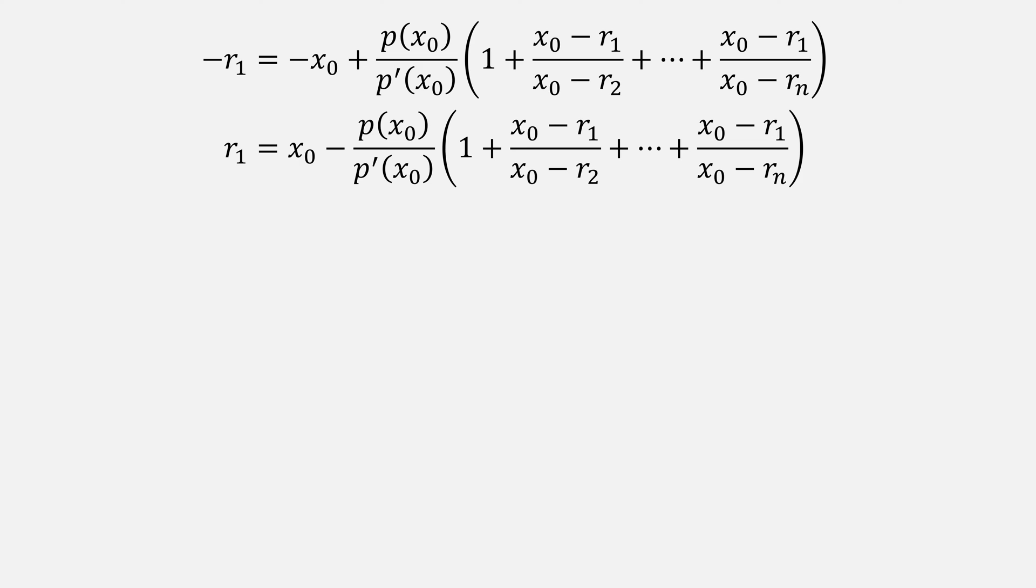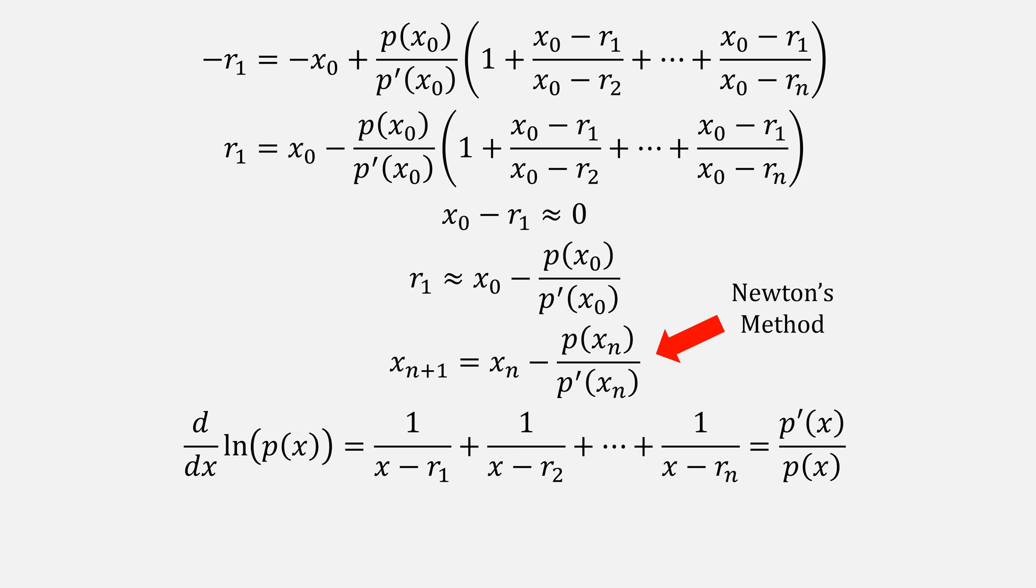Notice that we said x0 was close to r1, so that subtraction is about 0 for all the numerators in that summation. Therefore, r1 is approximately x0 minus p at x0 divided by p prime at x0. If we let that value be x sub n plus 1, this is Newton's method. We came up with it from this form, using the derivative of the natural log of p.